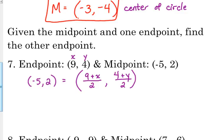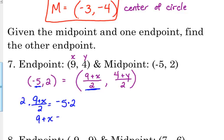Essentially, what we have here are two equations. The x matches with the x-coordinate. So 9 plus x over 2 is equal to negative 5 — just set the x parts equal to each other, the first part of each point. To solve this, we've got to get rid of the dividing by 2, so we multiply both sides by 2. We get 9 plus x is equal to negative 10. Then we subtract 9, so we get negative 19 for our x.